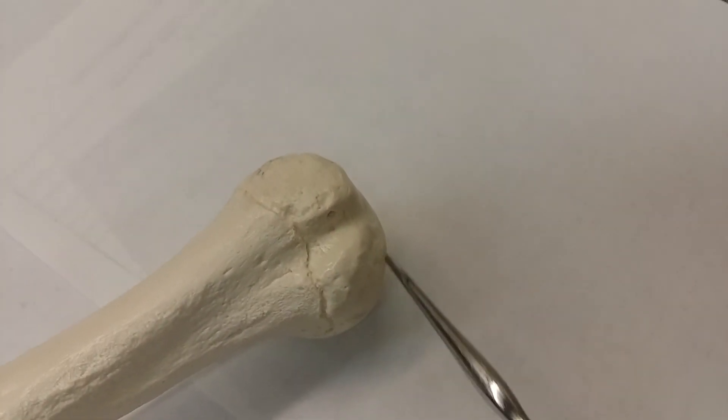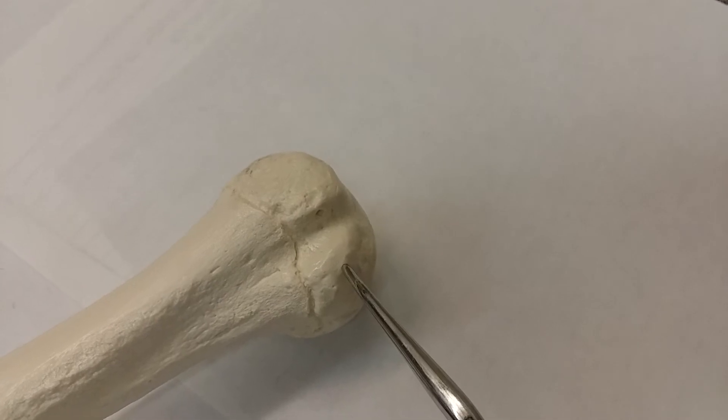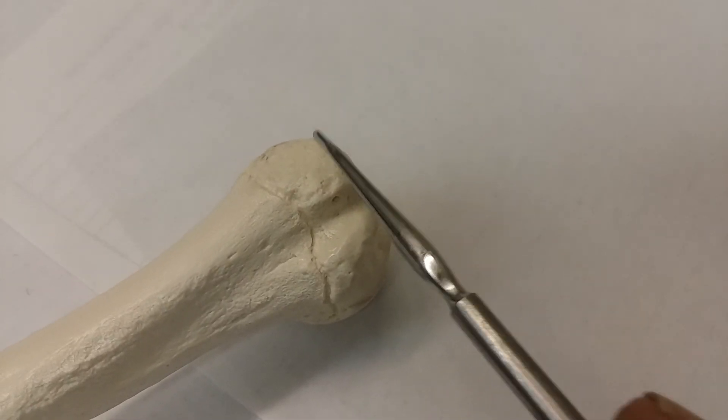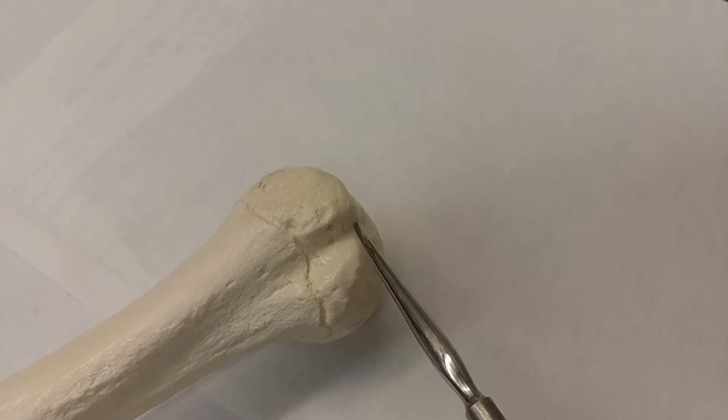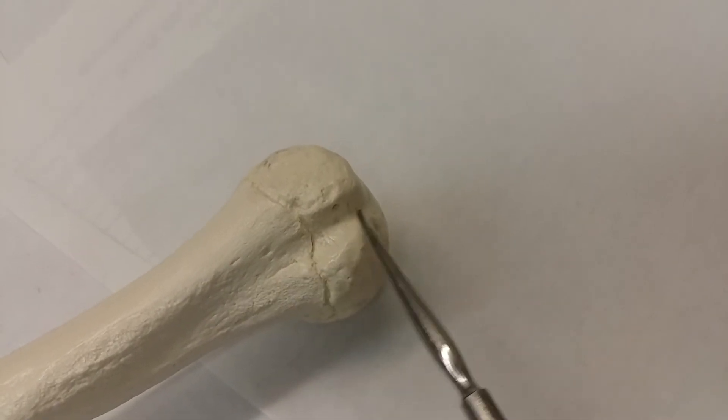And this section right here is called the lesser tubercle. And in between the greater and lesser tubercle is the intertubercular sulcus, which is right here.